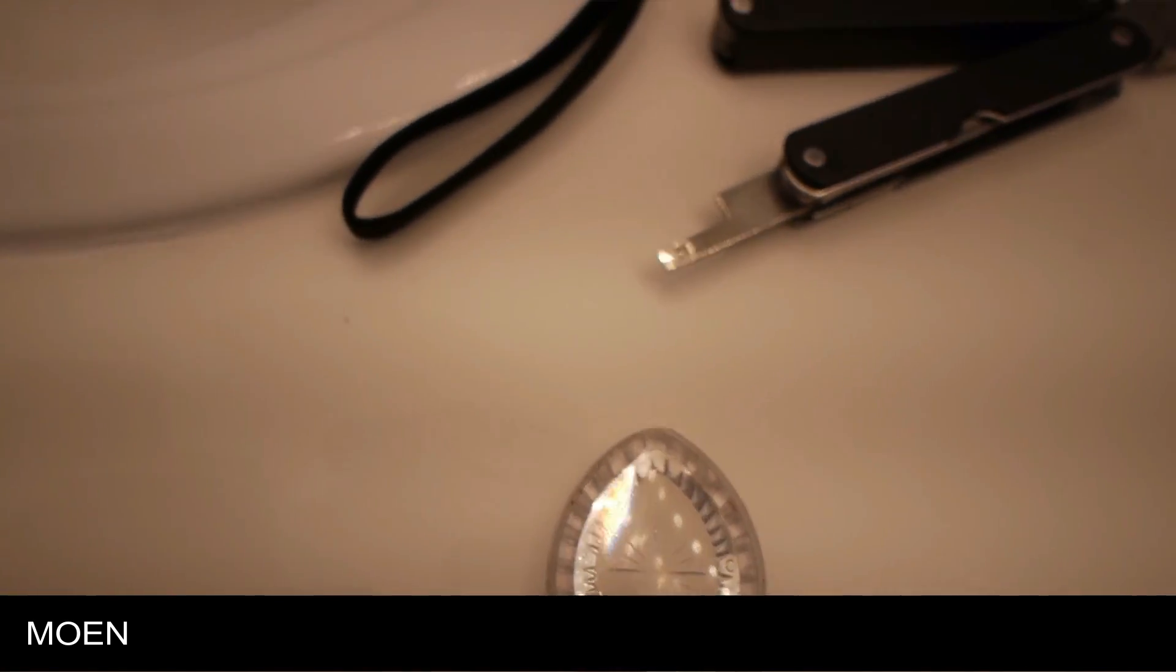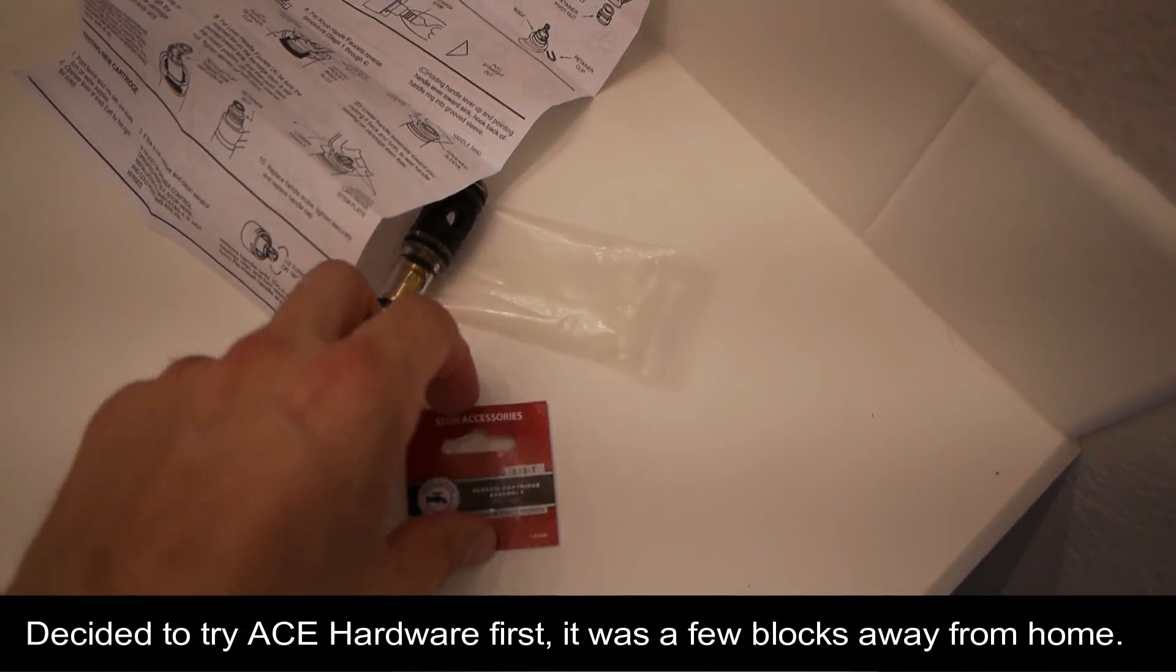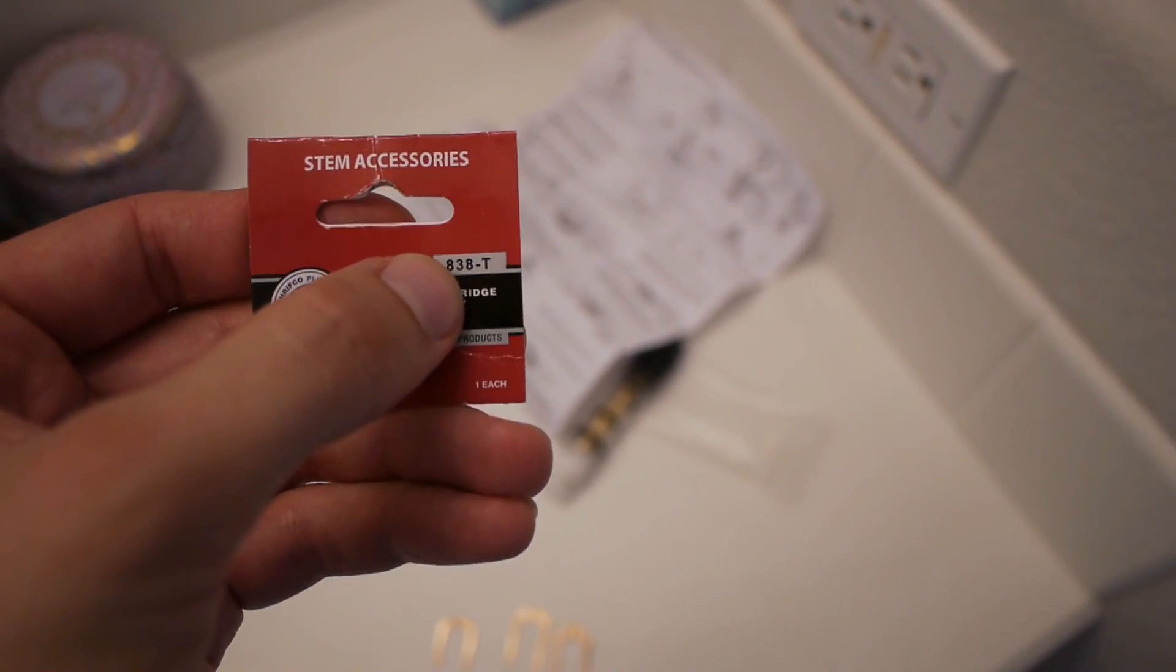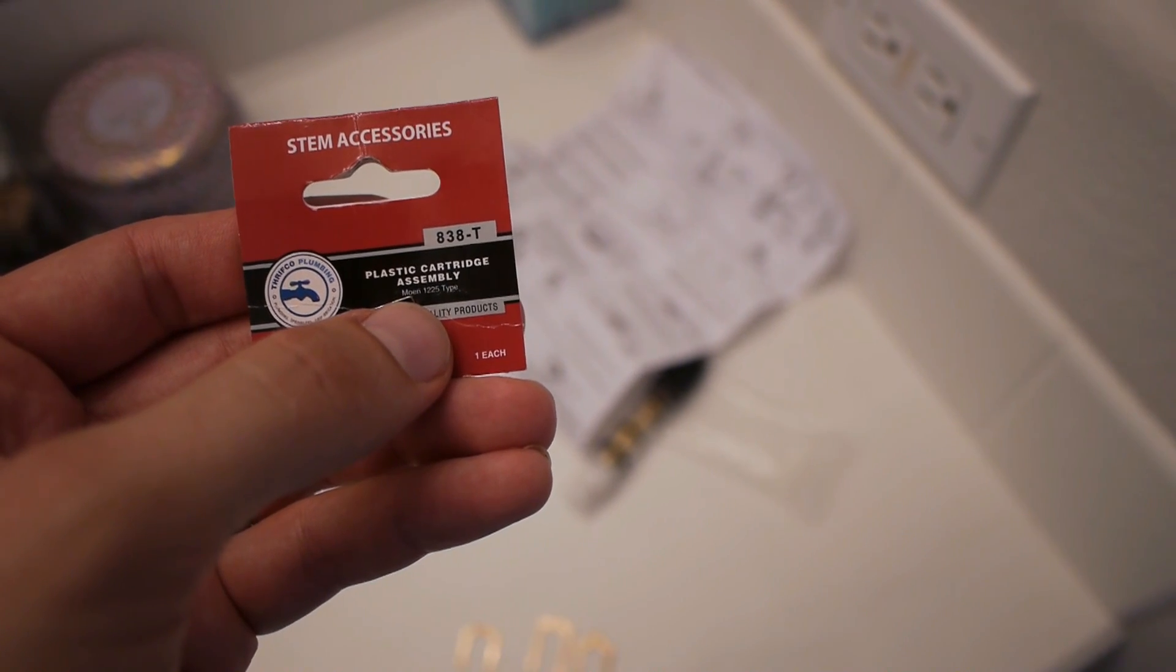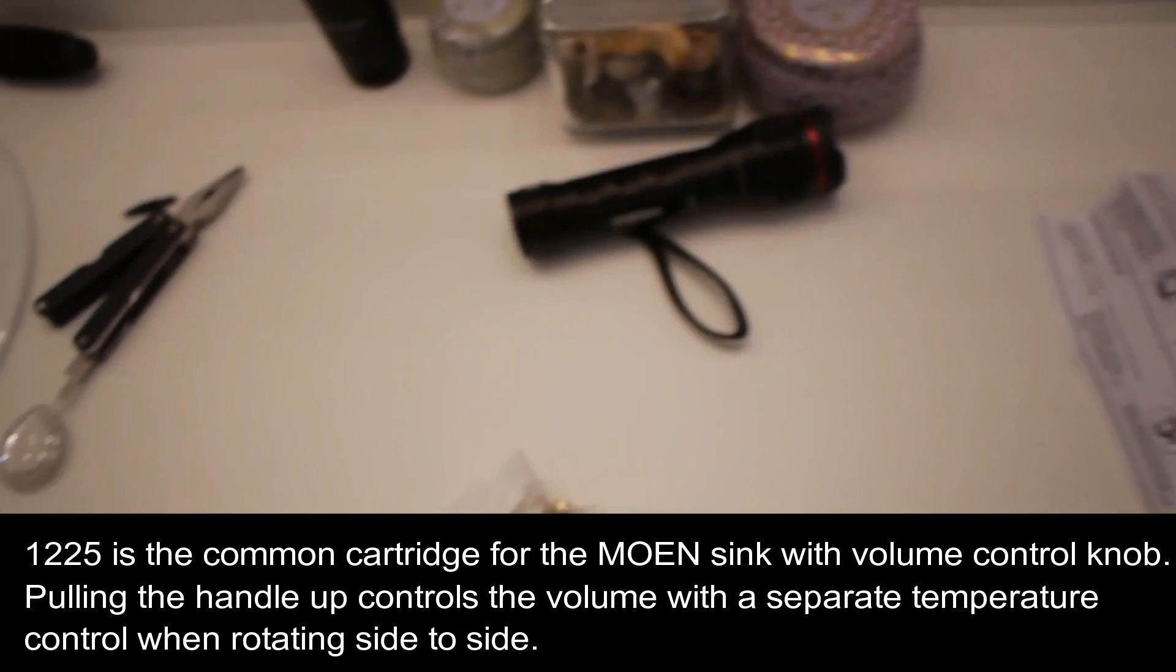So I'm gonna go to Home Depot. Hopefully those guys can help me out. I'm gonna bring this part, maybe measure some diameters or whatever lengths, and then replace. Just went to Ace and picked up this replacement cartridge, which is 838T, but it says it's replacement for Moen 1225.